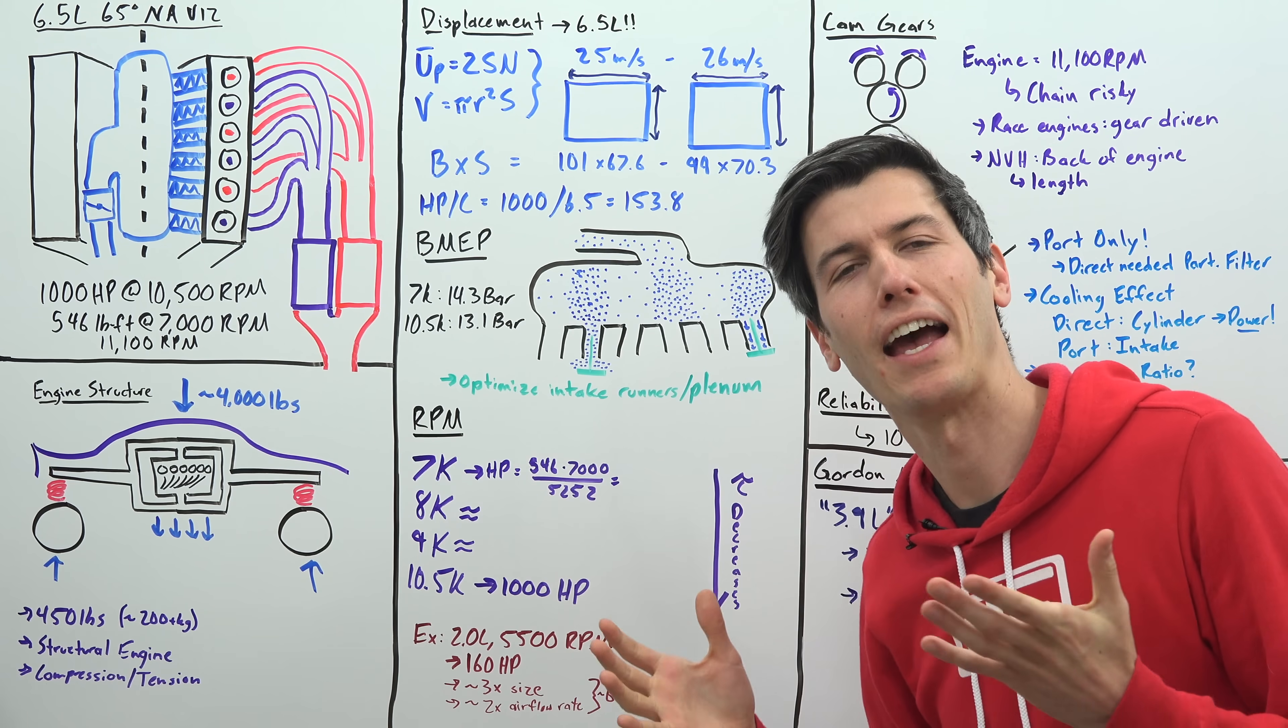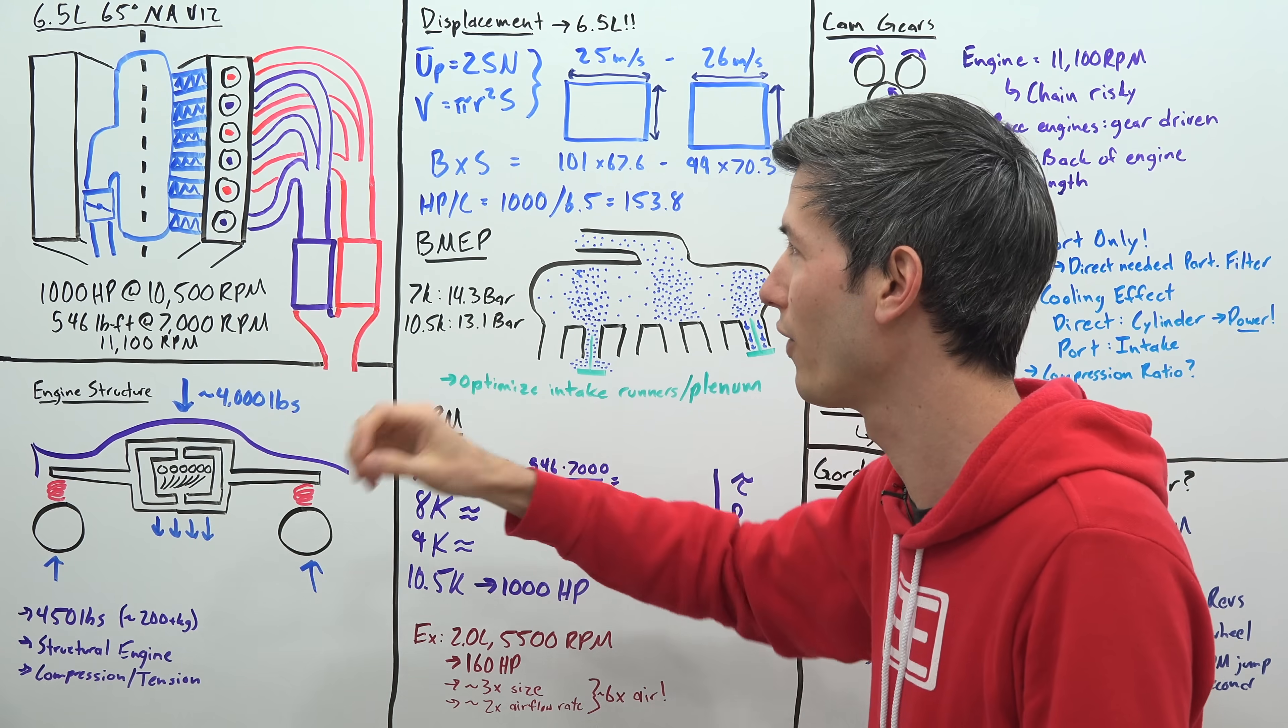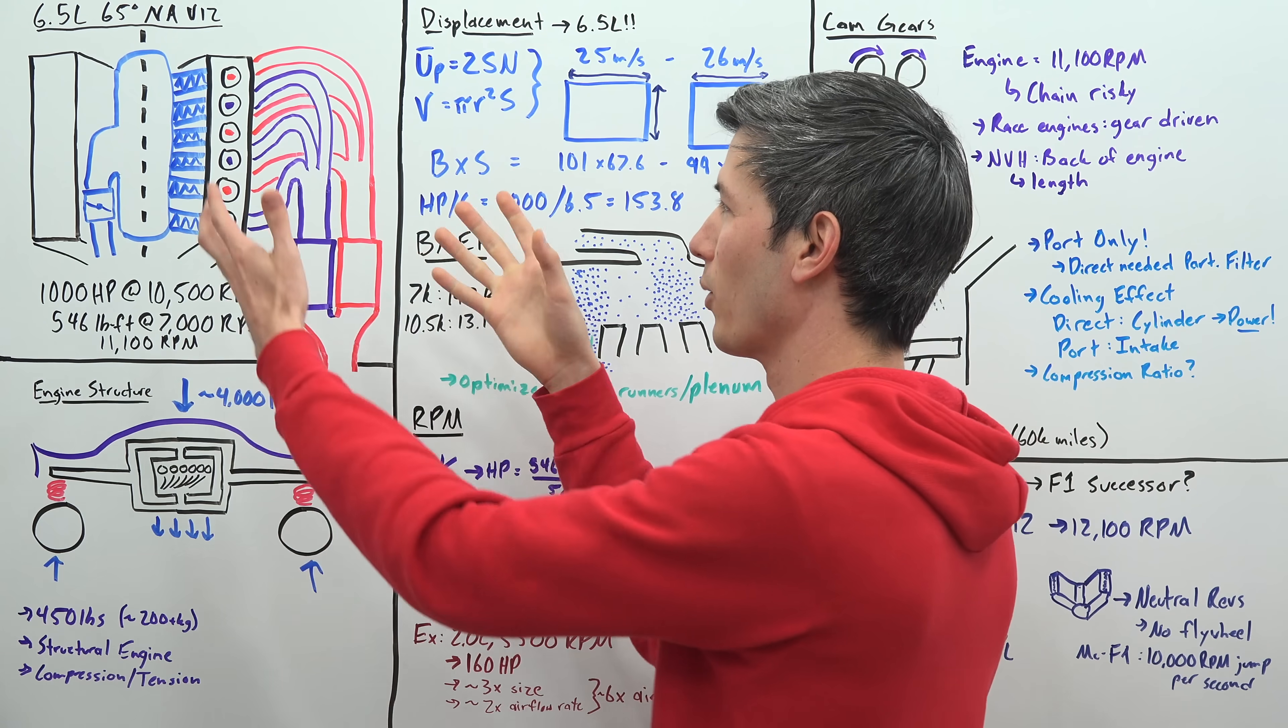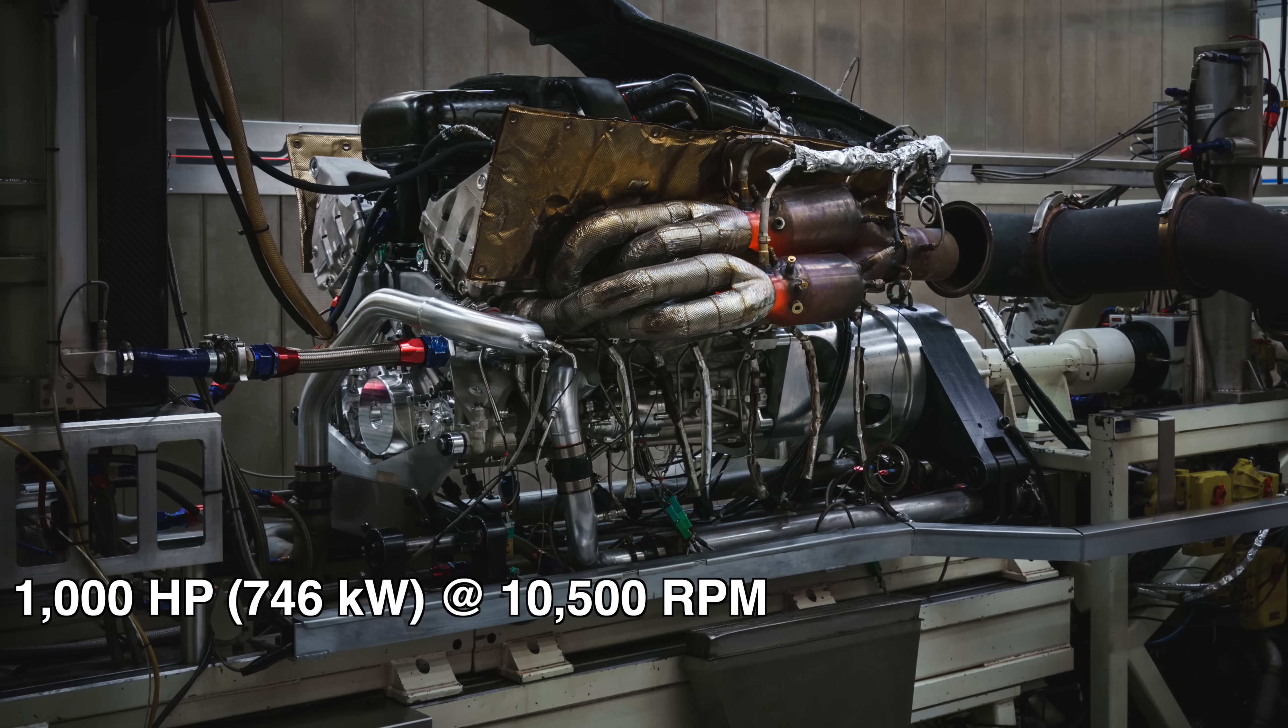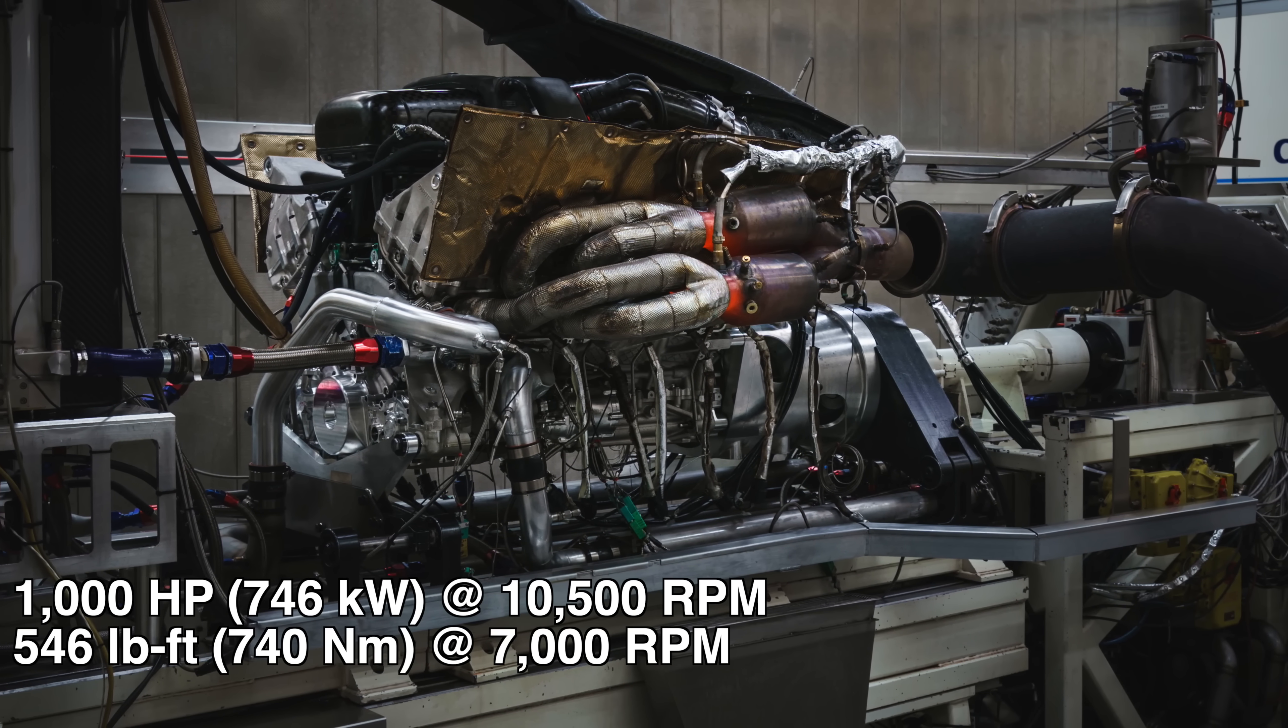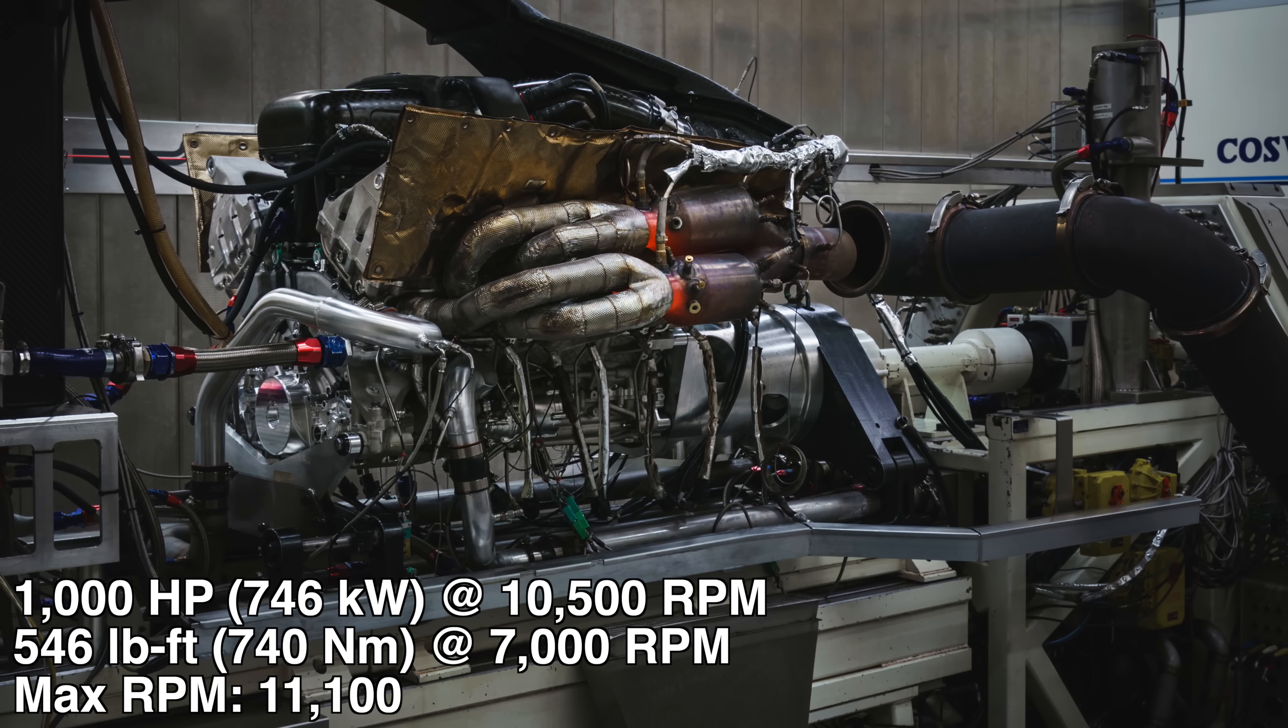So let's start off with the Aston Martin Valkyrie. Again this is a 65 degree naturally aspirated V12 engine, it is 6.5 liters so it is certainly a healthy size. Here we have a simplified diagram of what this engine looks like. It's producing a thousand horsepower at 10,500 rpm and 546 pound-feet of torque at 7,000 rpm and revs all the way to 11,100 rpm.